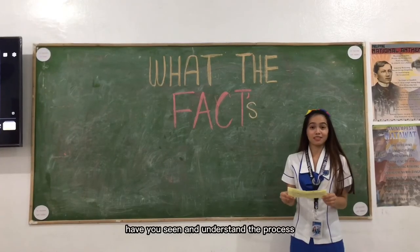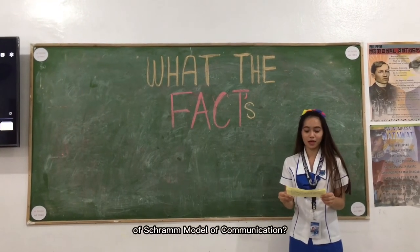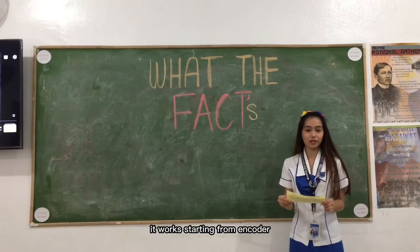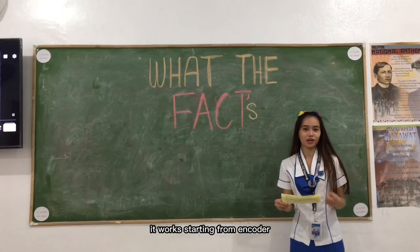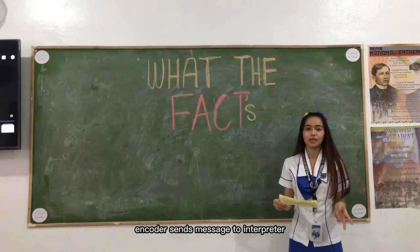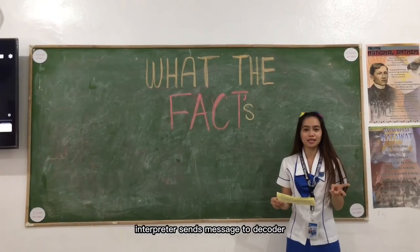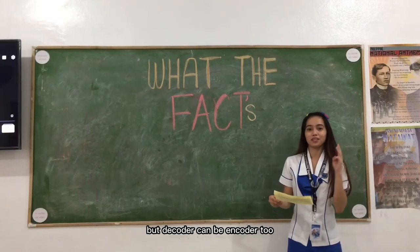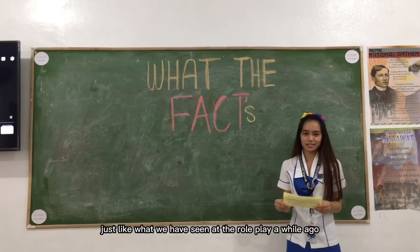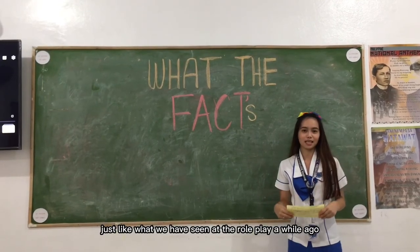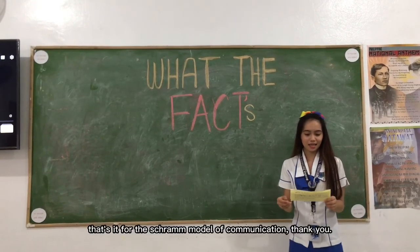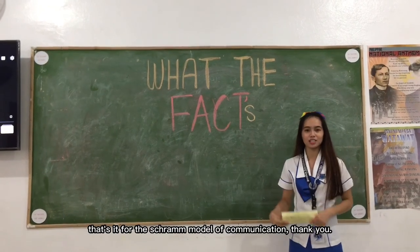Have you seen and understood the process of the Scrum Model of Communication? Starting from the encoder, the encoder sends a message to the interpreter, the interpreter sends the message to the decoder, but the decoder can be the encoder too — just like what we saw in the roleplay. So that's it for the Scrum Model of Communication. Thank you!